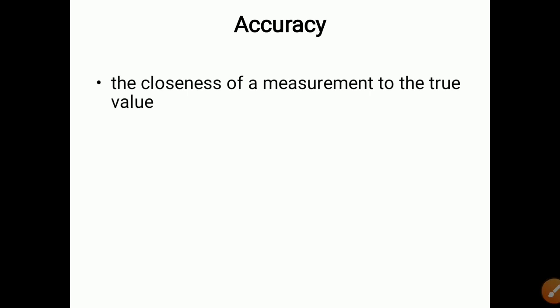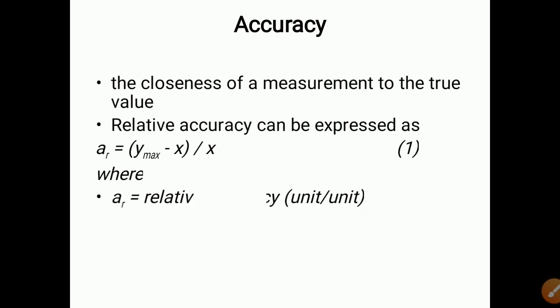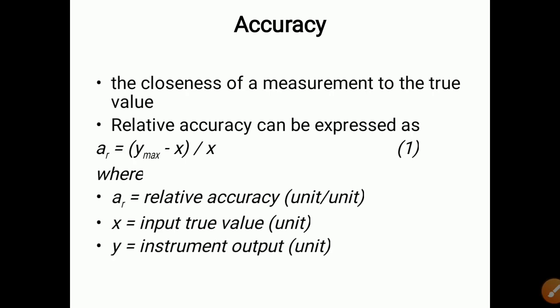Now we will study accuracy. Accuracy is defined as the closeness of measurement to the true value. Suppose the true value is 100 and the instrument gives a value close to 100 — say 99 or exactly 100 — then the instrument is accurate. There is also a term called relative accuracy, AR, whose formula is AR = (Y_max − X) / X, where X is the input true value and Y is the instrument output.